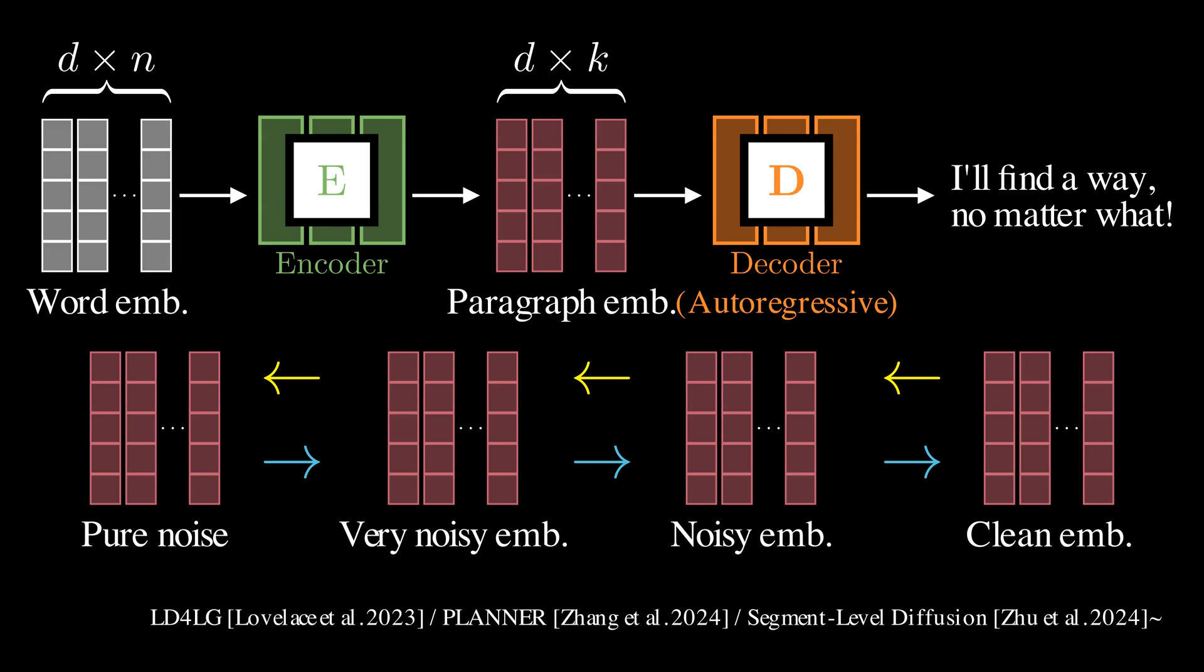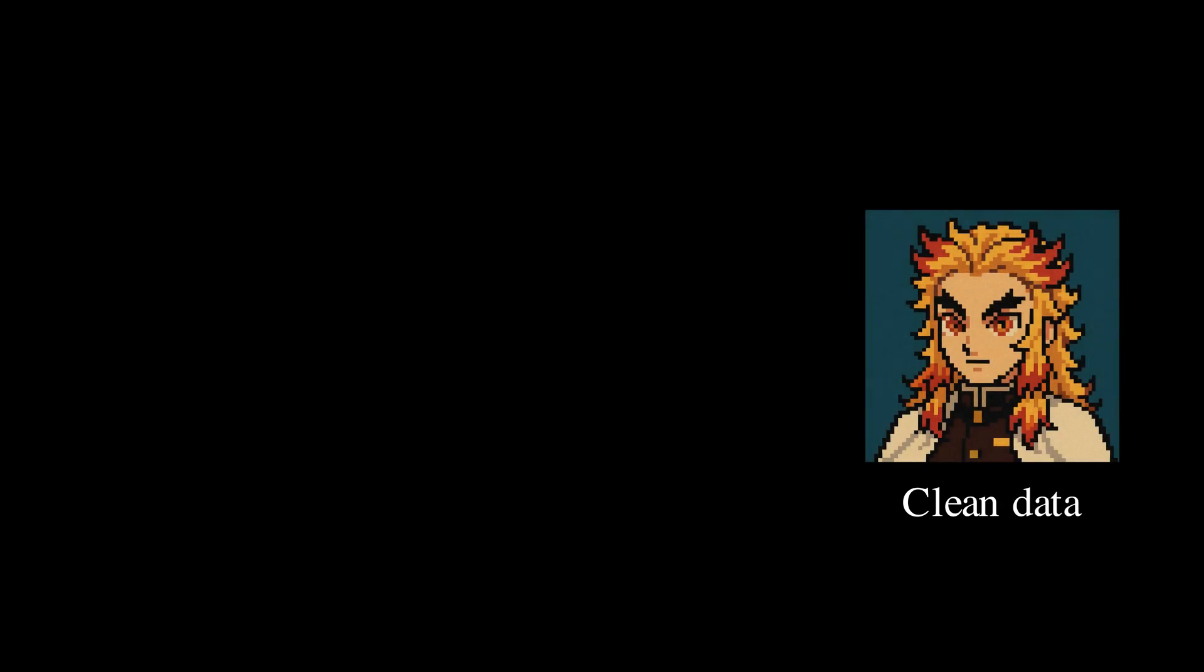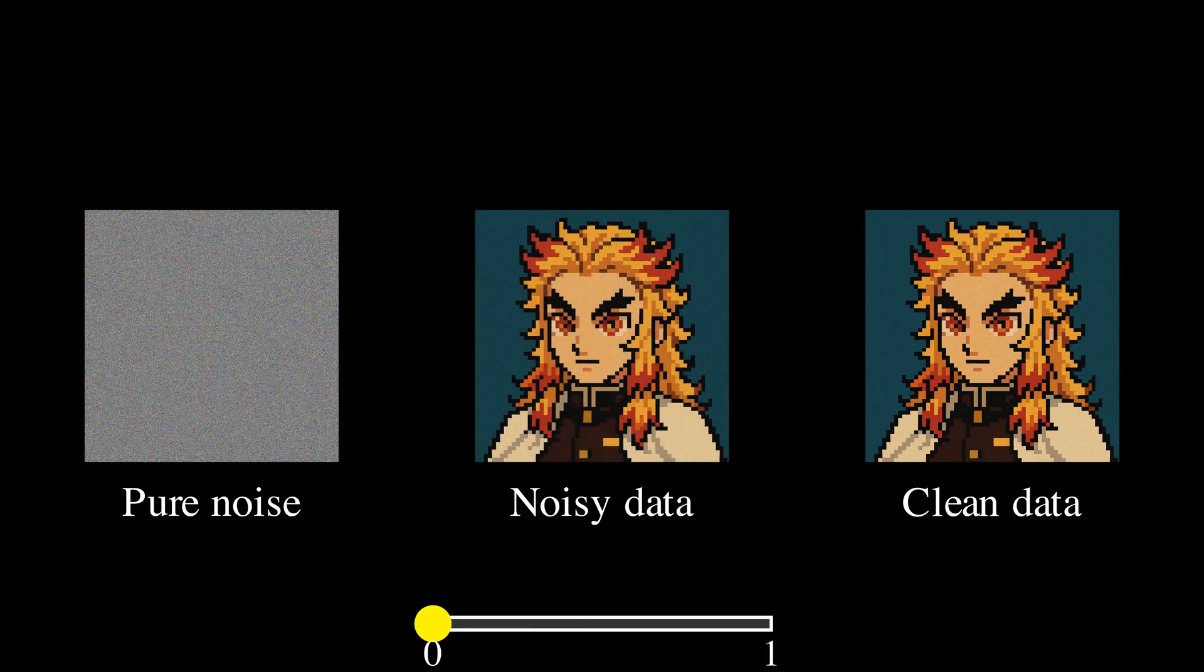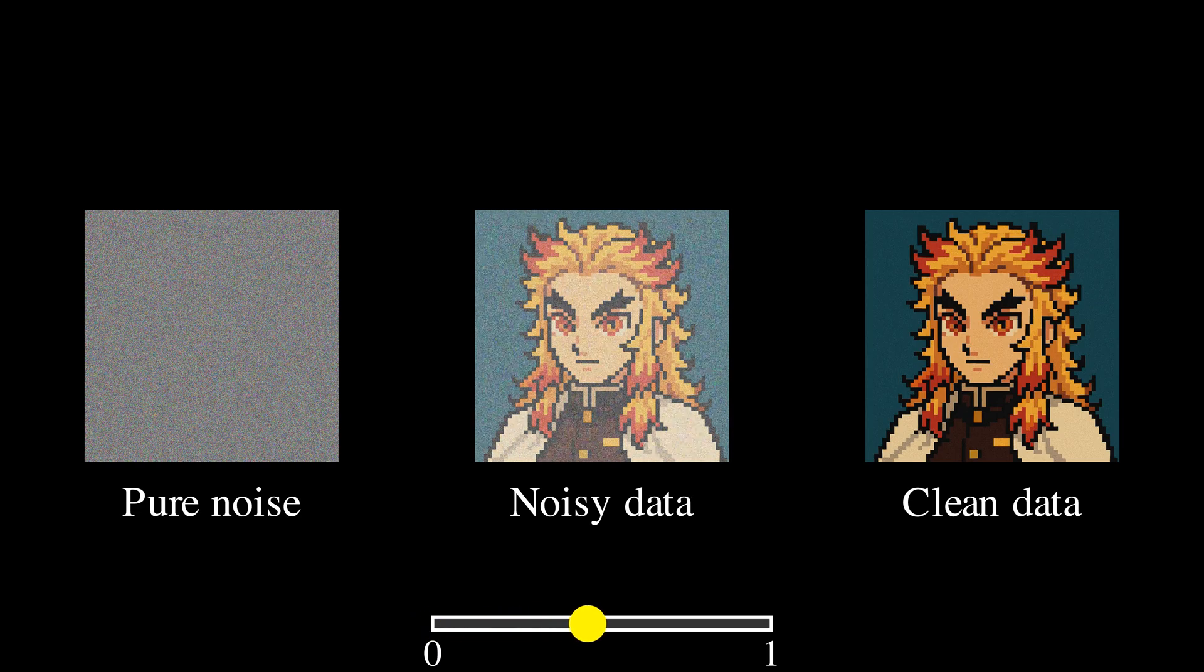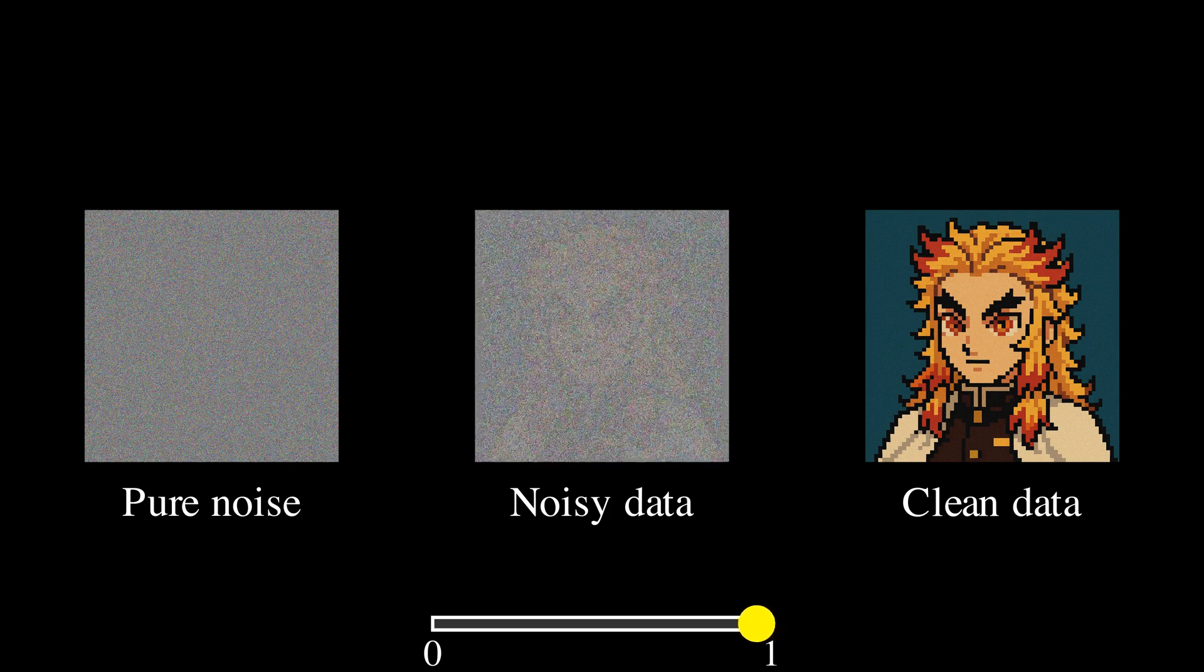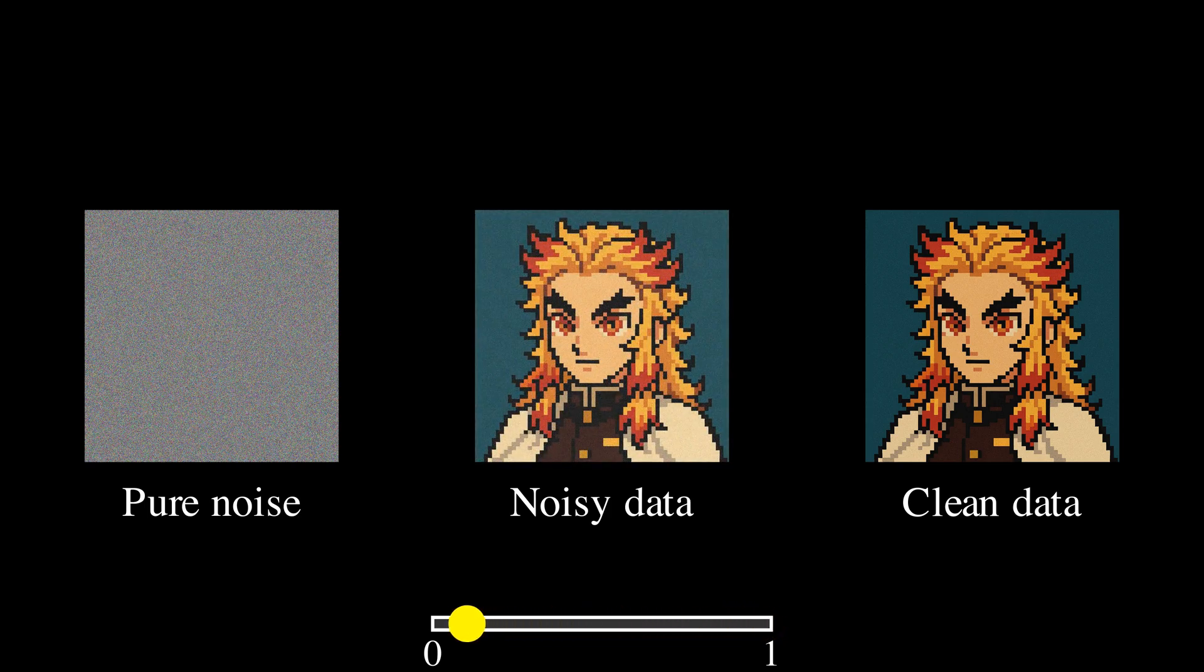However, this approach still requires converting back and forth between discrete tokens and continuous representations. Is it possible to apply diffusion directly in the discrete space? Let's first build some intuition using images. Here, we create noisy data by linearly combining the clean data and pure noise. This enables a gradual transition between the original data distribution and the noise distribution.